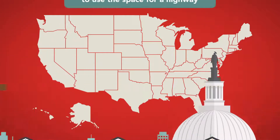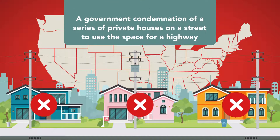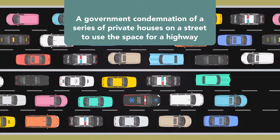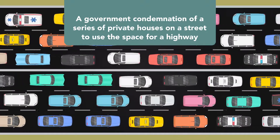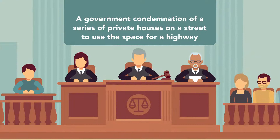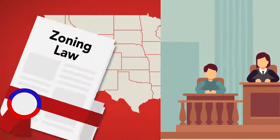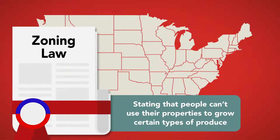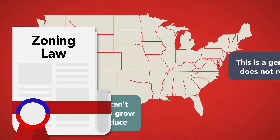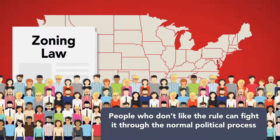For example, a government condemnation of a series of private houses on a street to use the space for a highway is a particularized action made on individualized grounds — it requires due process. But if the government passes a zoning law stating that people can't use their properties to grow certain types of produce, this is a generalized action and does not require due process. Rather, people who don't like the rule can fight it through the normal political process.